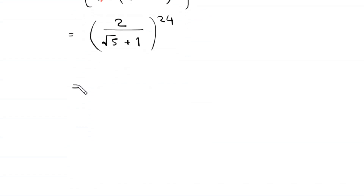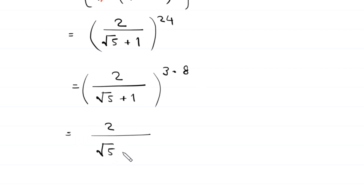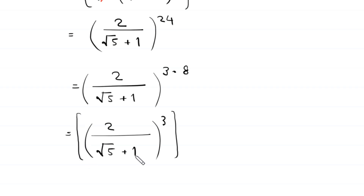Next, we have 2 divided by root 5 plus 1, whole to the power 24. This 24 can be written as 3 times 8. So the expression becomes 2 over root 5 plus 1, whole cubed, and then whole to the power 8.